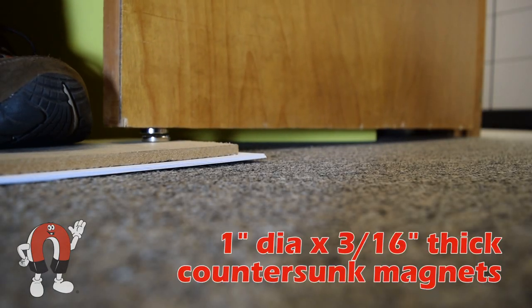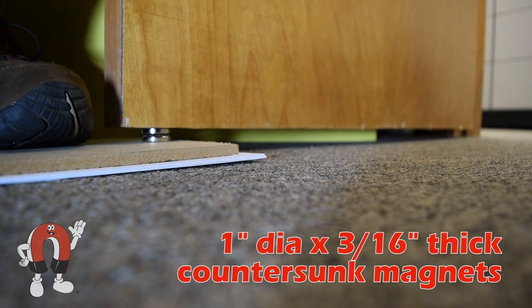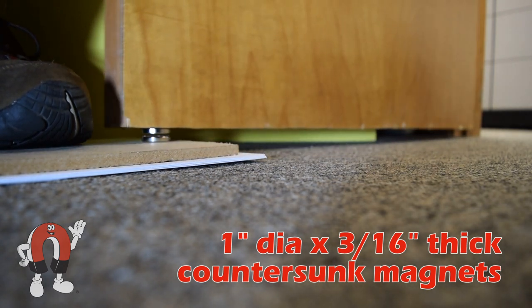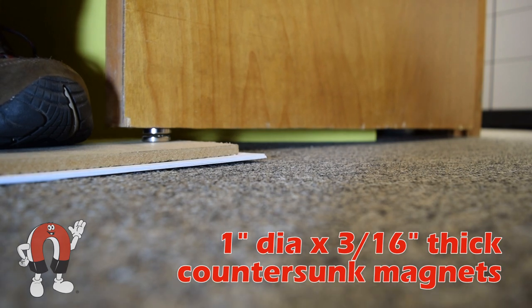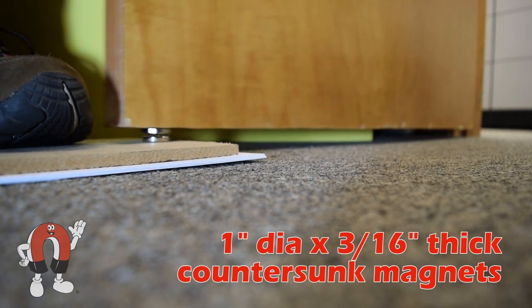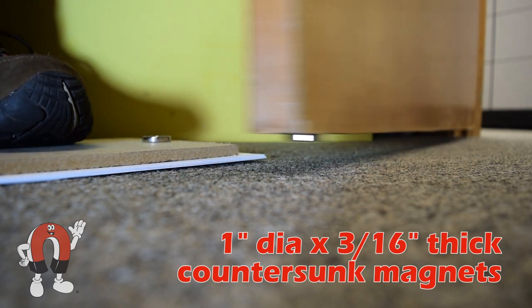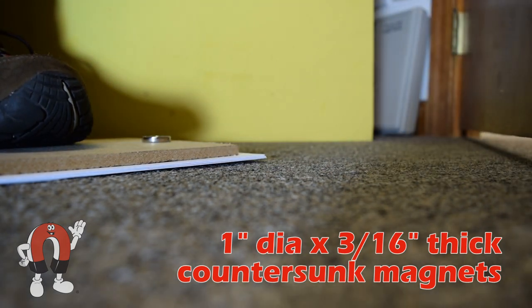Here we're doing a similar thing but with an actual door. This setup mimics what would happen if you had a magnet at the top or bottom of the door and another magnet either on the floor or in the header of the door jamb. This lightweight hollow core door is held nicely by some one inch diameter by three sixteenth inch thick countersunk magnets.